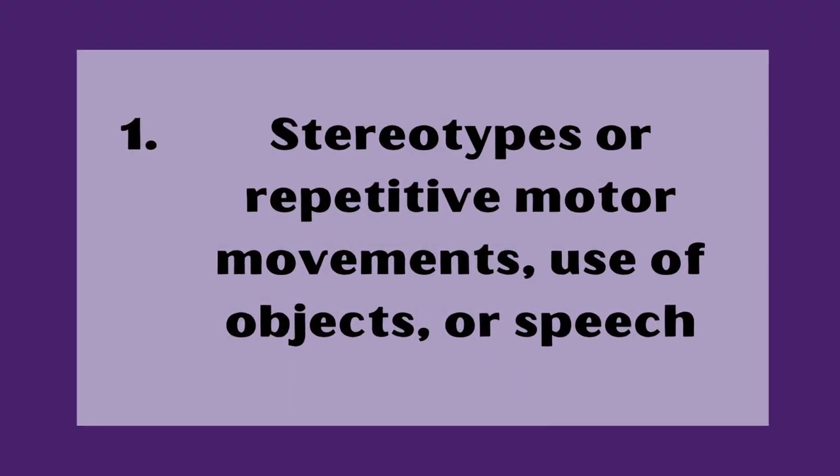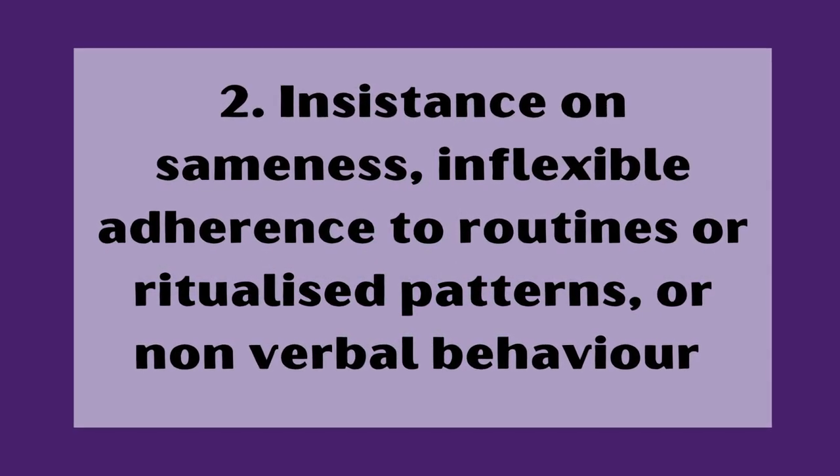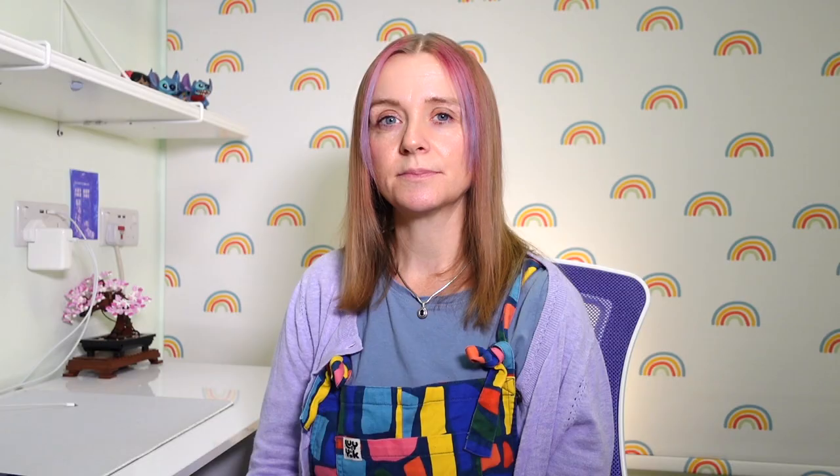Now we move on to section B, which describes behaviours associated with restrictive and repetitive patterns of movement, behaviour and activities. One: stereotyped or repetitive motor movements, use of objects or speech — this includes things like lining things up, echolalia and stimming. Two: insistence on sameness, inflexible adherence to routines or ritualised patterns of behaviour. For example, I really struggle with change, even really small change, like not being able to do my morning routine in the order I normally do it. I find transitions really hard — I always do a little bit of reading after lunch, and because it comes after lunch every day, that makes the transition possible for me. This also covers needing to eat the same food every day or needing to eat off the same plate every day.